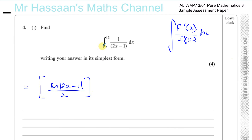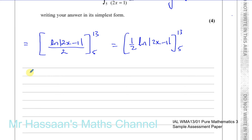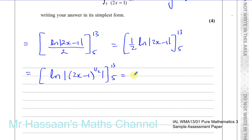Now we evaluate between the limits 5 and 13. This is a half times ln|2x minus 1|, evaluated from 5 to 13. Using the power law, this becomes ln|2x minus 1| to the power of a half, evaluated from 5 to 13. Substituting 13: 2 times 13 is 26, minus 1 is 25. Substituting 5: 2 times 5 is 10, minus 1 is 9. We don't need plus C since it's a definite integral.